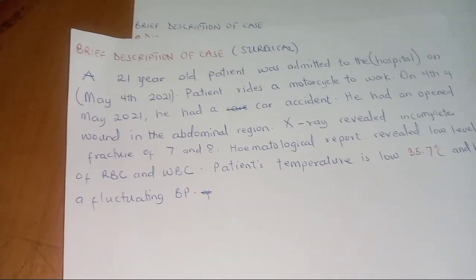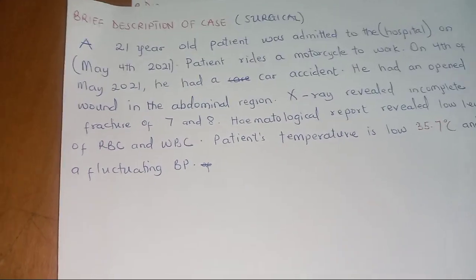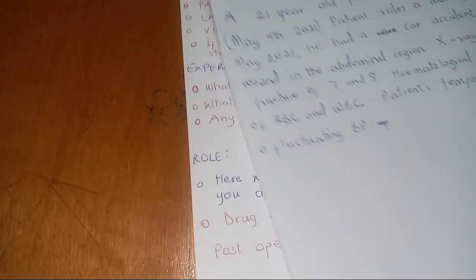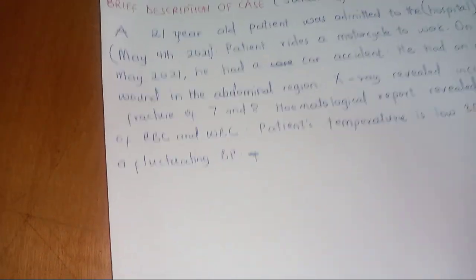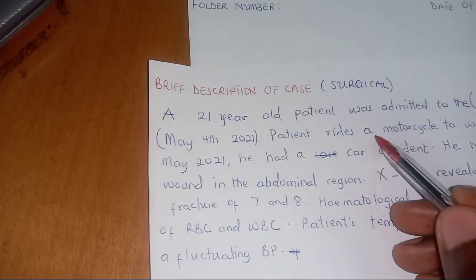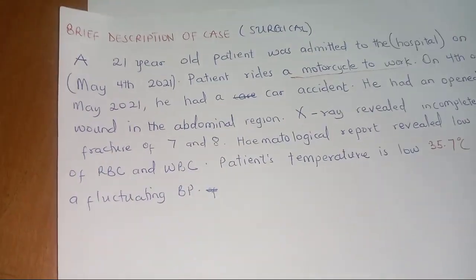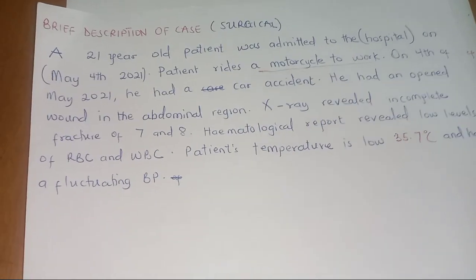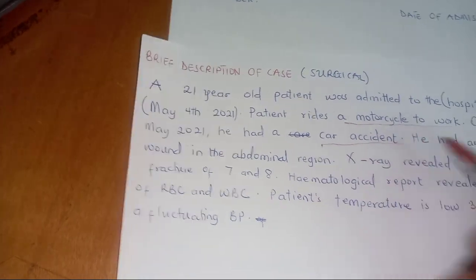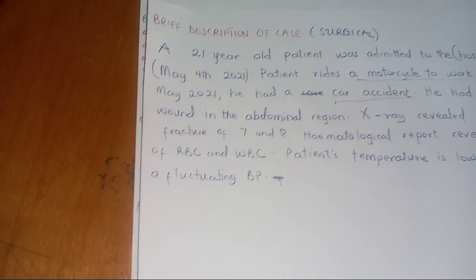A 21-year-old patient was admitted to the hospital — this is how you should present it. The patient rides a motorcycle to work, which is very relevant to the case because we might anticipate an accident. On the 4th of May 2021, he had an accident and was involved in a road traffic accident. This is just the history — past medical, surgical, and obstetric history.